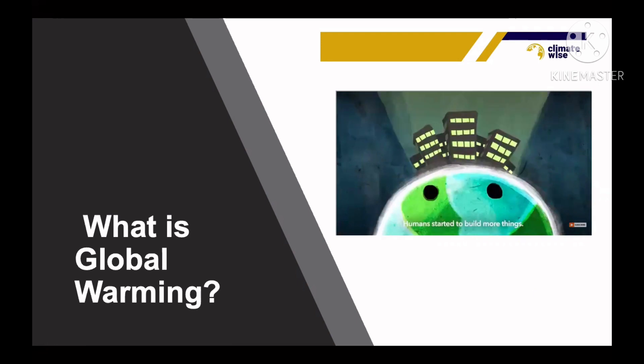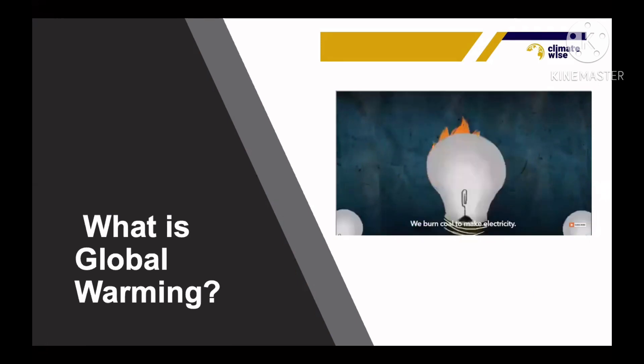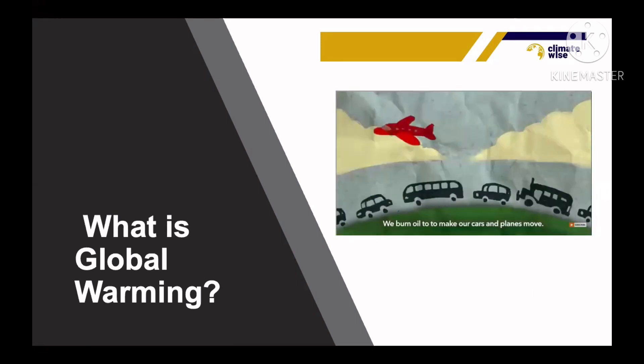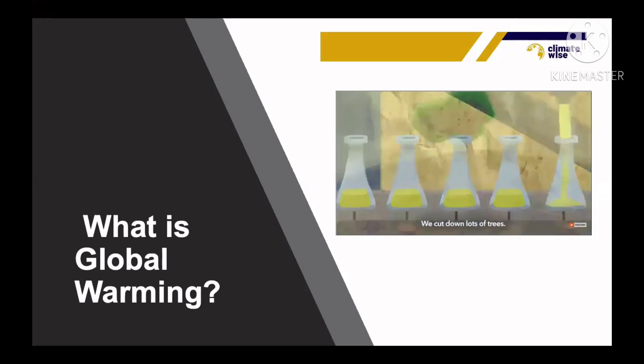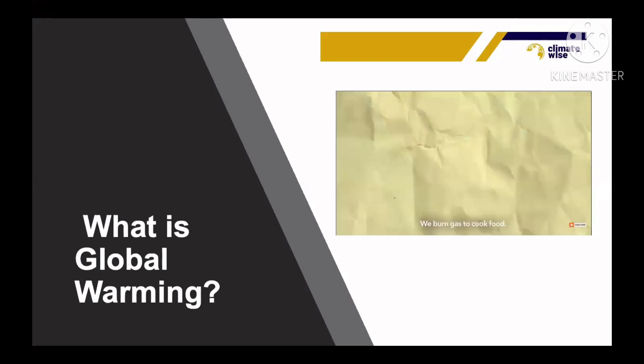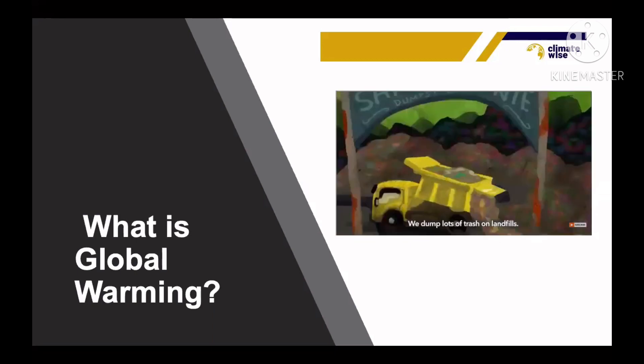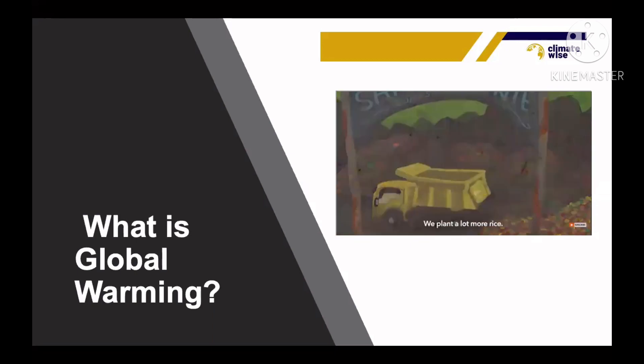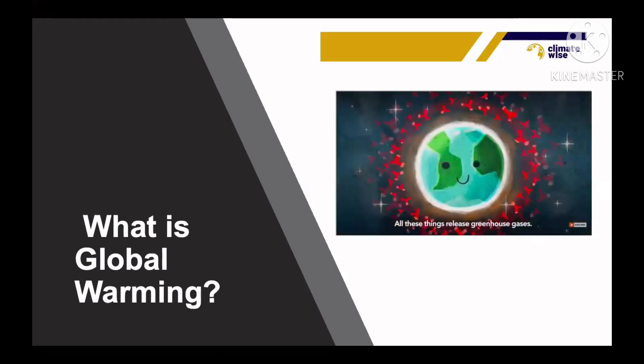It started in the 1700s. Humans started to build more things. We burn coal to make electricity. We burn oil to make our cars and planes move. We use chemicals to make things. We cut down lots of trees. We burn gas to cook food. We dump lots of trash on animals. We plant a lot more rice. All these things release greenhouse gases.